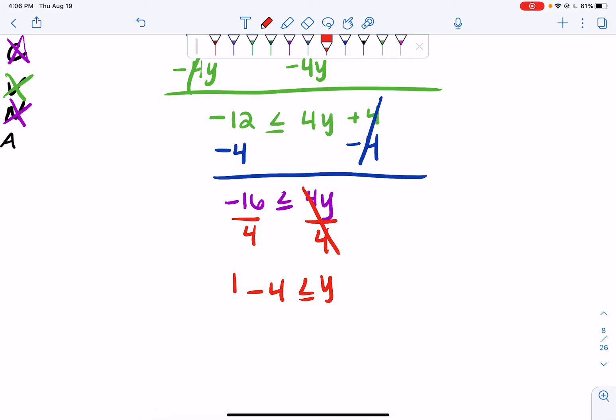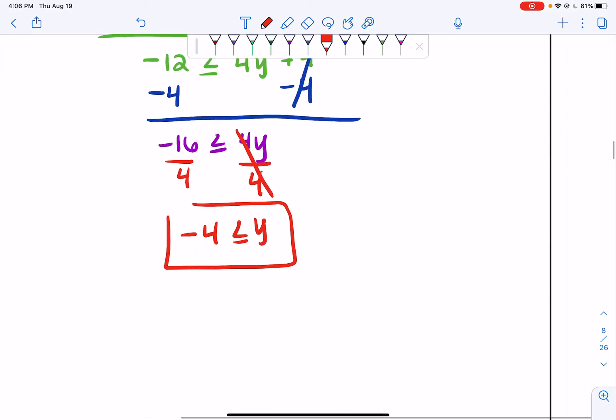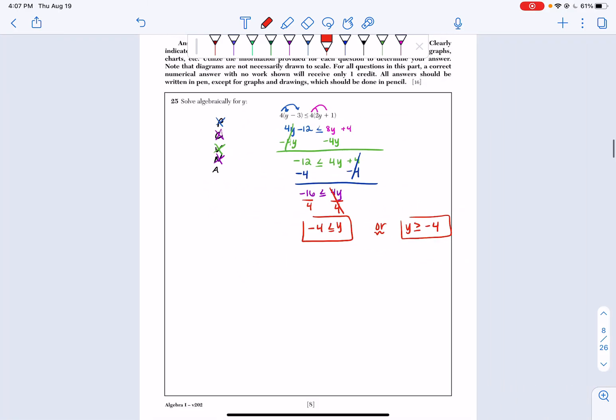So I can say my final answer is negative 4 less than or equal to y. Or if you want to, you could rewrite it as y greater than or equal to negative 4. Both will be acceptable. And that's your final answer.